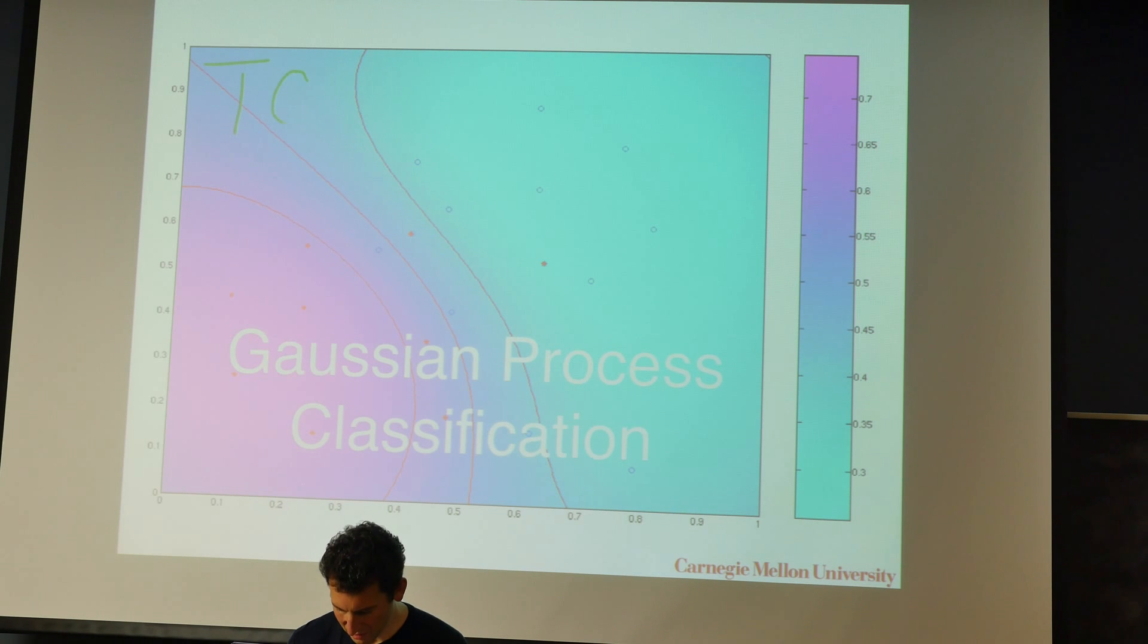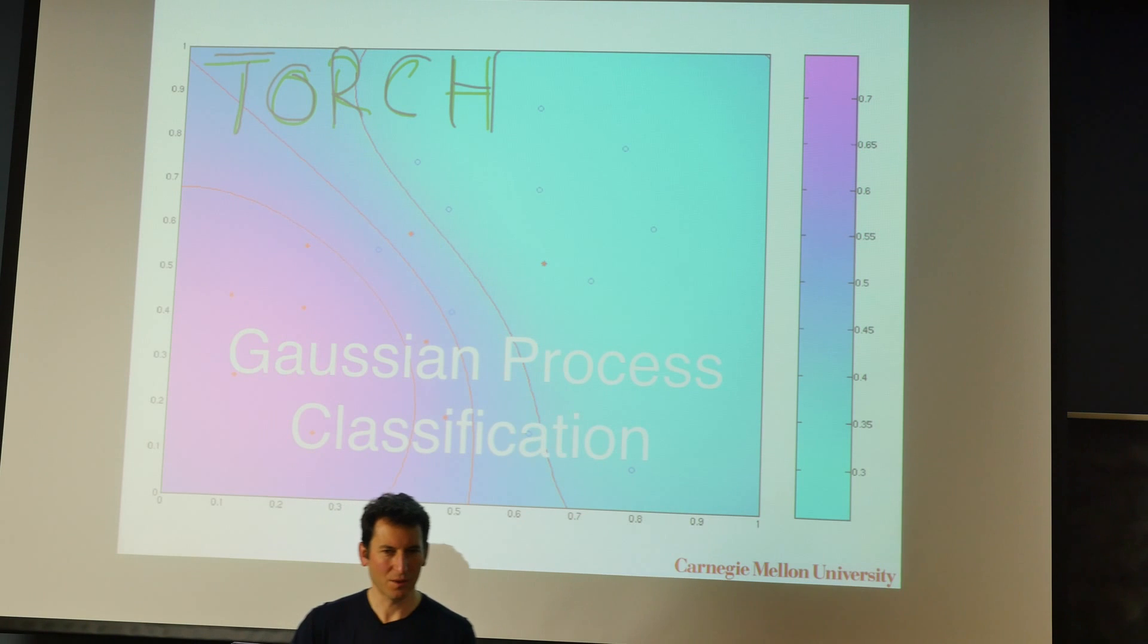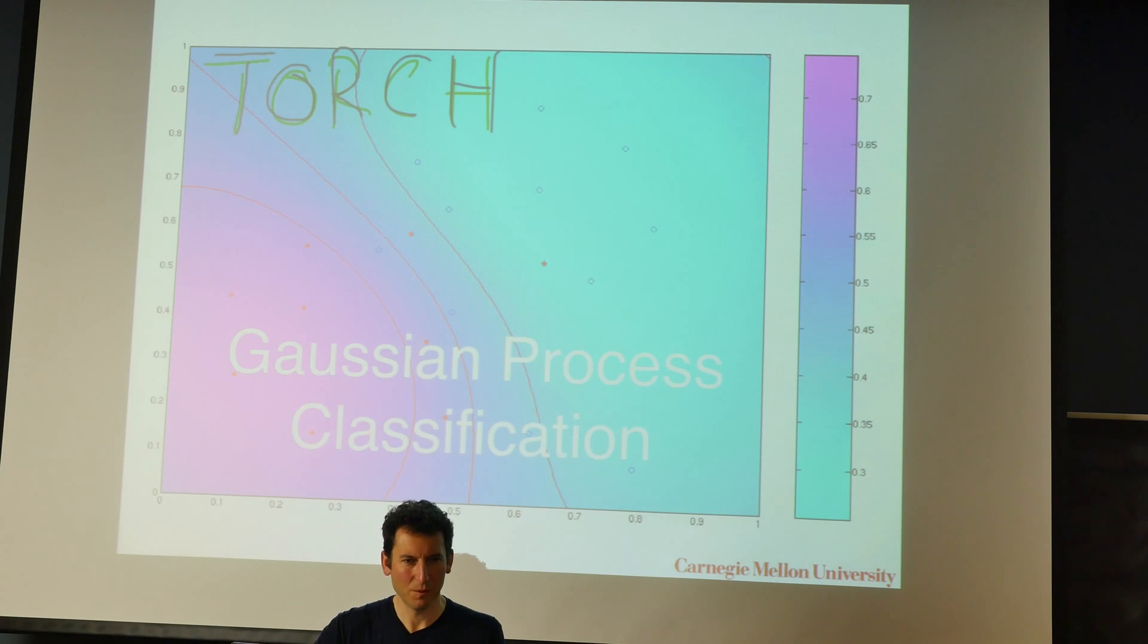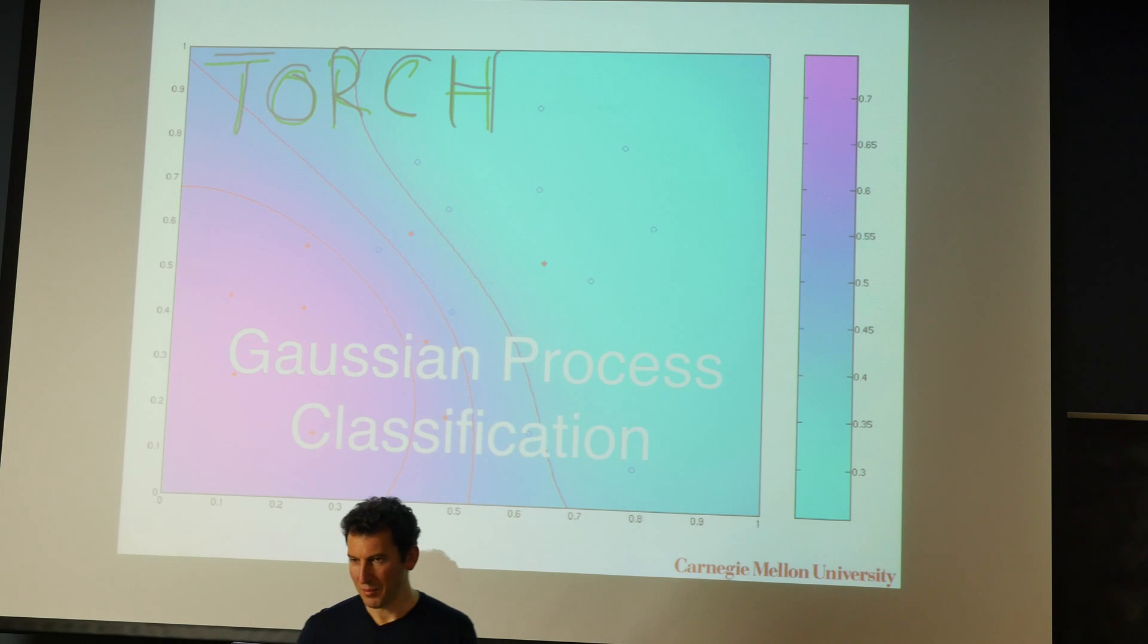So the first one is called Torch. Torch is good if you like to write in some weird Lisp-like version called Lua. This is the language in which you specify the models, and it's a fairly integrated way. I'm not the biggest fan of it, but there's a lot of actual use of that in industry. So you should use Torch, and you should use all the Facebook extensions to Torch if you want to use that.